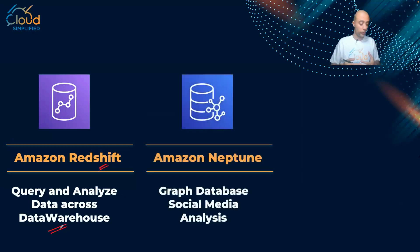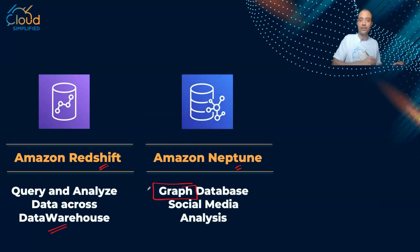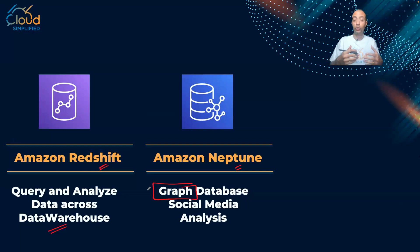The second type is Amazon Neptune. The keyword for Amazon Neptune is graph database. Any exam question that says graph database — and graph databases are very helpful if you are building something like the relationships between social media friends, for example, if you want to do analysis for social media — that is a great use case for Amazon Neptune.